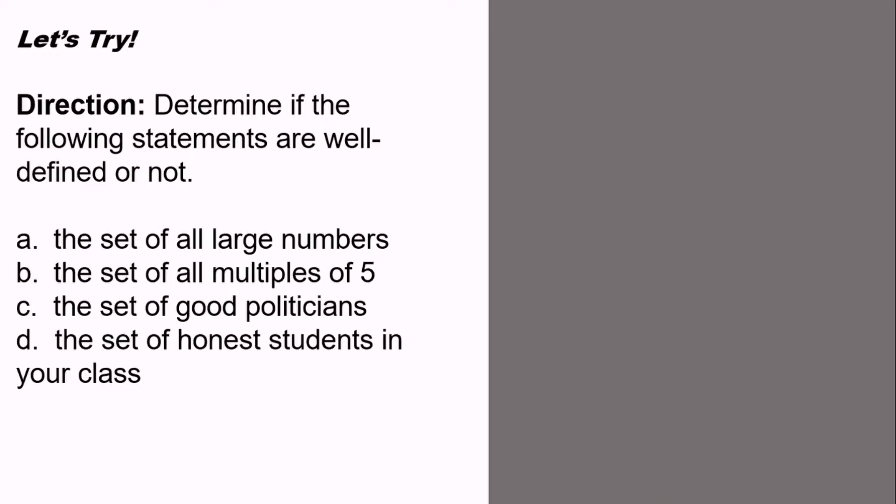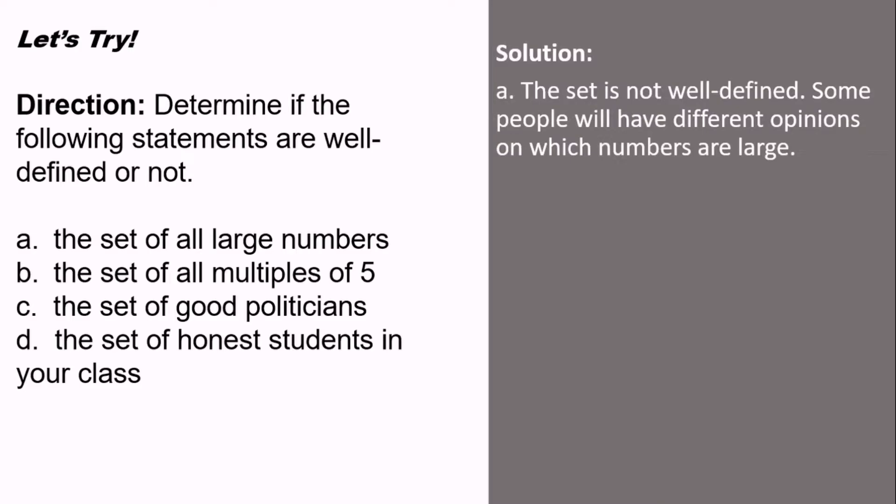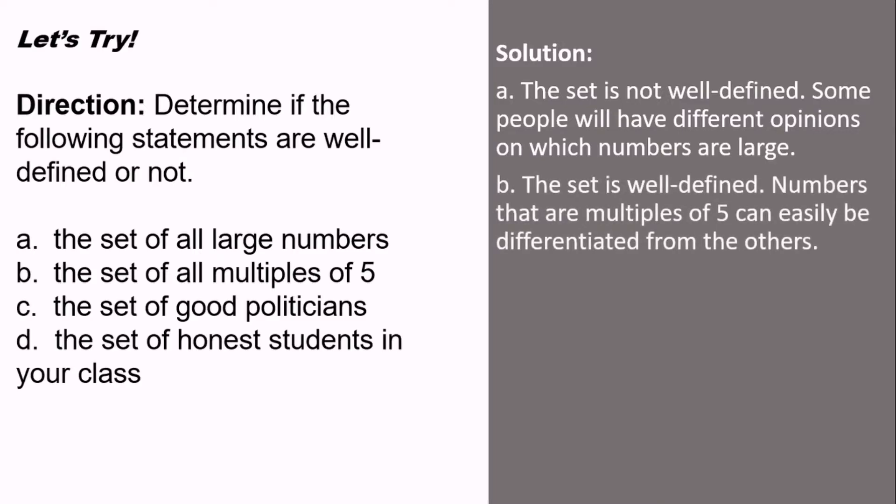So now, let's try to answer these four questions. Direction: determine if the following statements are well-defined or not. For letter A, the set of all large numbers. The answer for that is: the set is not well-defined because people will have different opinions on which numbers are large. For letter B, the set of all multiples of 5. The answer for that is: the set is well-defined; numbers that are multiples of 5 can easily be differentiated from the others.